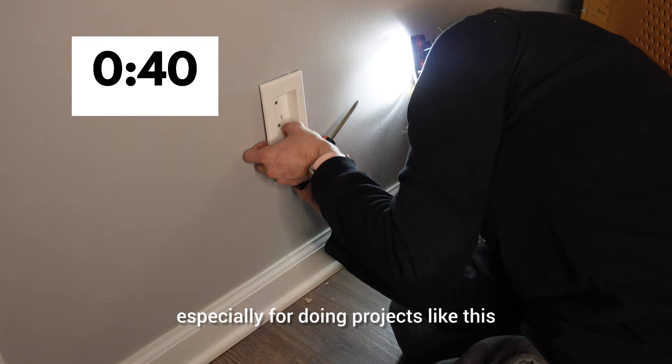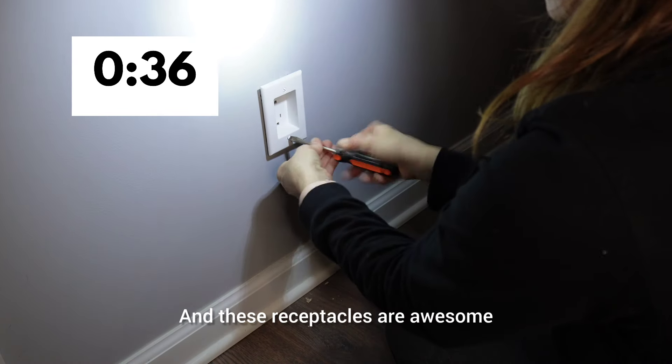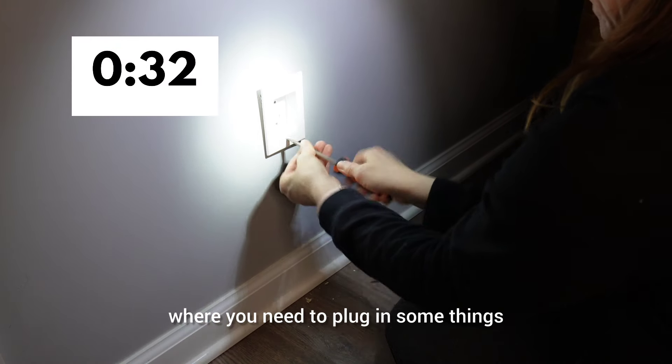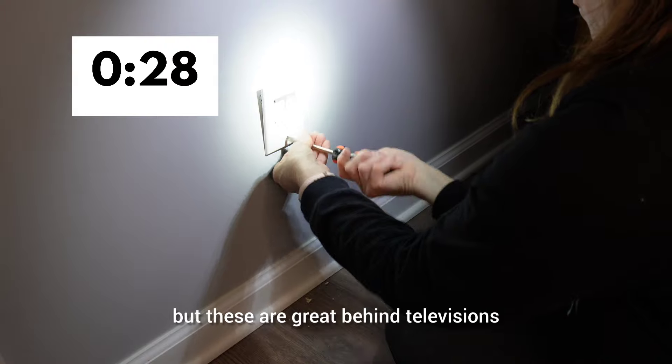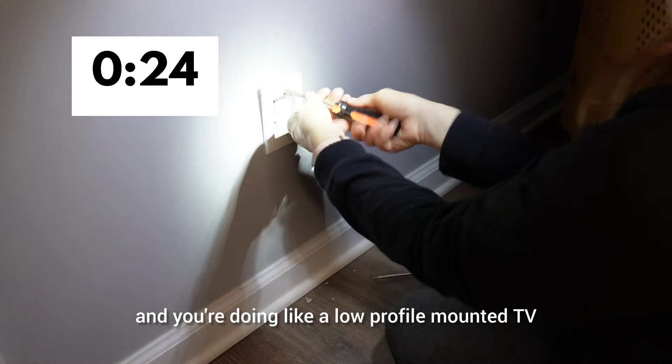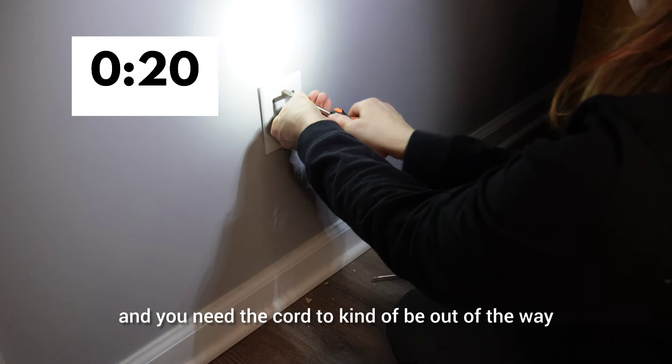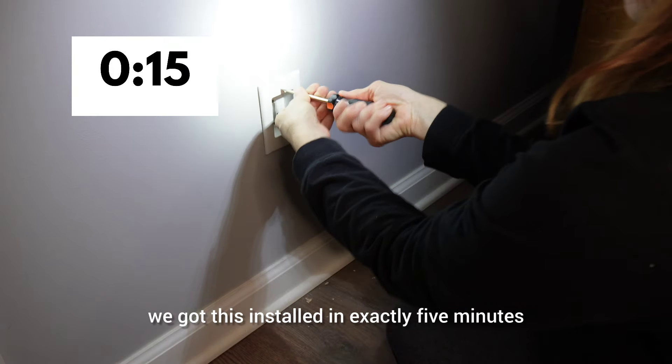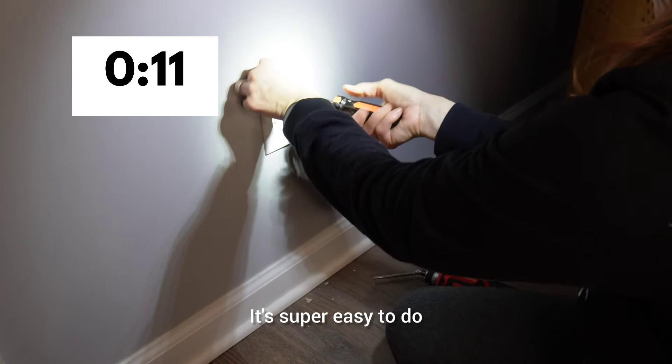And these receptacles are awesome. Not only are they good for low places like this where you need to plug in some things and push the furniture up against the wall, but these are great behind televisions. Like when you're hanging them on the wall, if you've got an outlet there and you're doing like a low profile mounted TV and you need the cord to kind of be out of the way, these boxes work great. And as you can see here, we got this installed in exactly five minutes. So you can do this yourself. It's super easy to do.